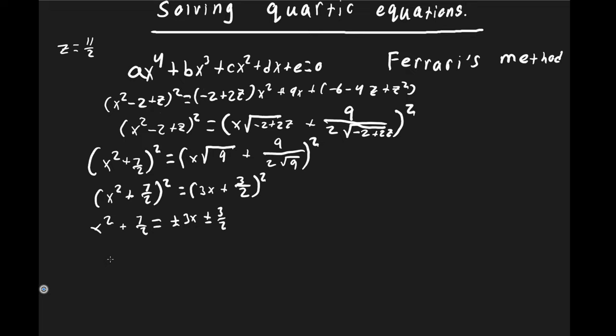Since the sign is positive, we take plus-plus and minus-minus. The first quadratic is x² − 3x − 2 = 0 (moving 3x + 3/2 − 7/2 = 3x − 2 to the left). The second quadratic is x² + 3x + 5 = 0.